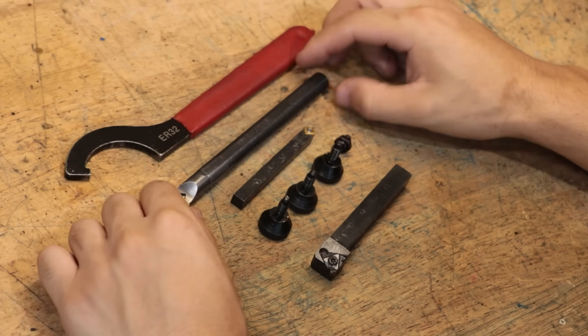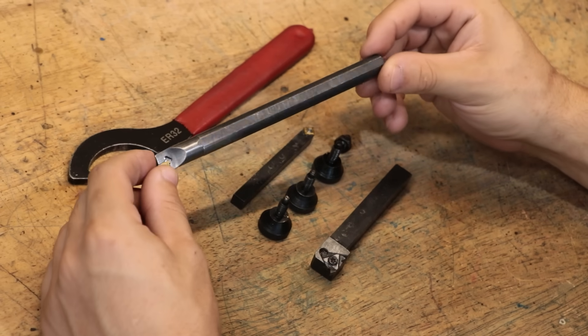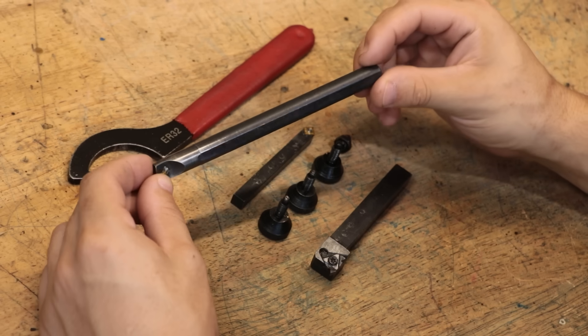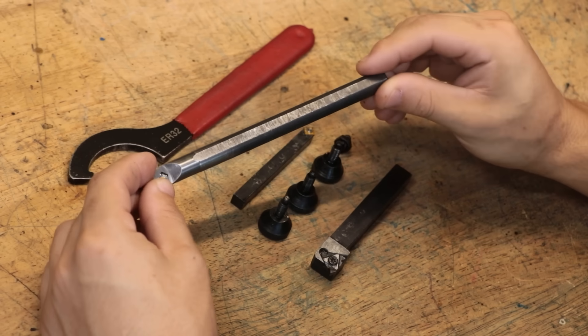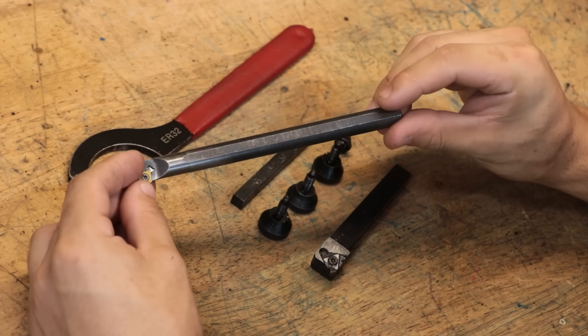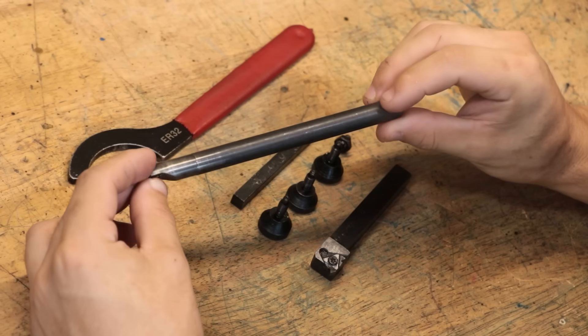At least to me, I think a black oxide or blue finish makes the tool look really nice, and depending on the method it is pretty inexpensive to do, at least on a commercial scale, and it does offer some level of rust protection.